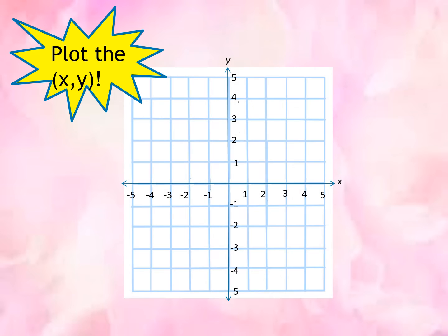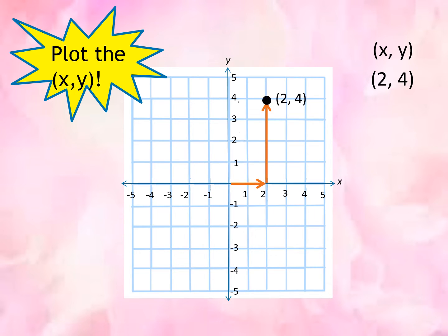Now let us plot the point (2, 4). To plot (2, 4), we have that point. The x comes first: x is equal to 2, y is equal to 4.